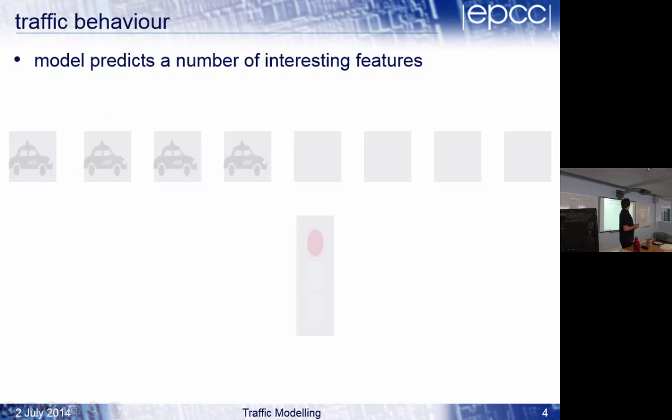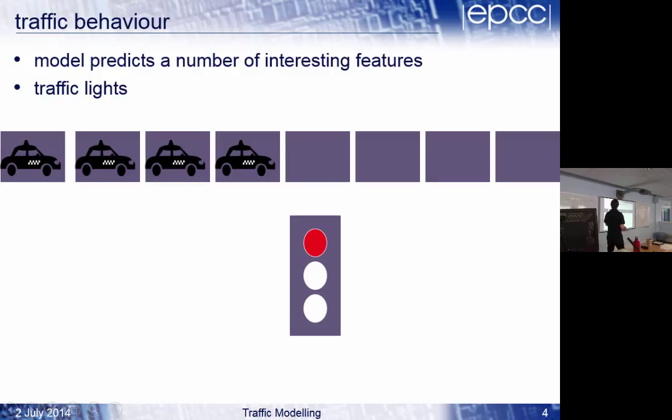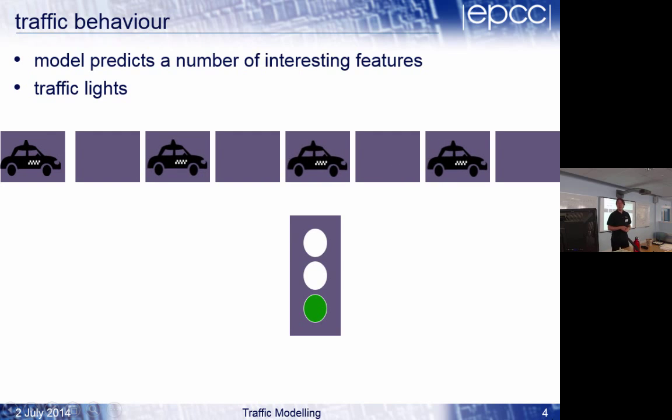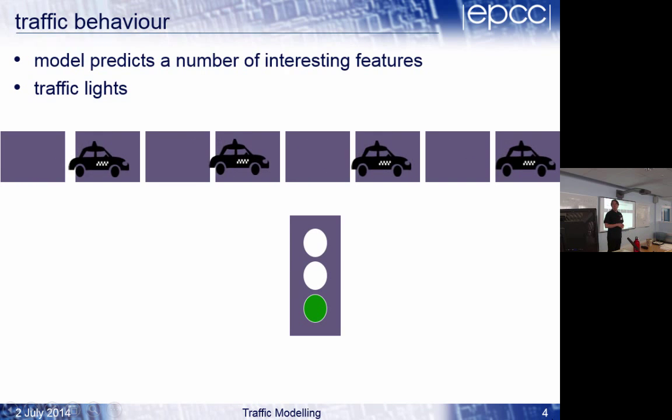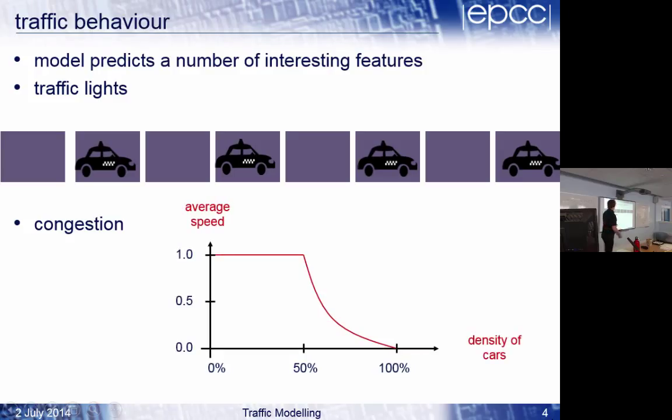So it does actually predict a few interesting features. If you have traffic lights and the cars are lined up, they don't all move off as a block. They move off when the lights go green in a reasonably realistic way. And actually, it does predict congestion. If you look at the average speed of the cars against the density of the cars, you'll see that if you're less than 50% full, at some point they get this car, gap, car, gap thing, and they all move at speed one. But above 50% filling, you get a drop in the average speed. And at 100% filling, it's complete congestion.